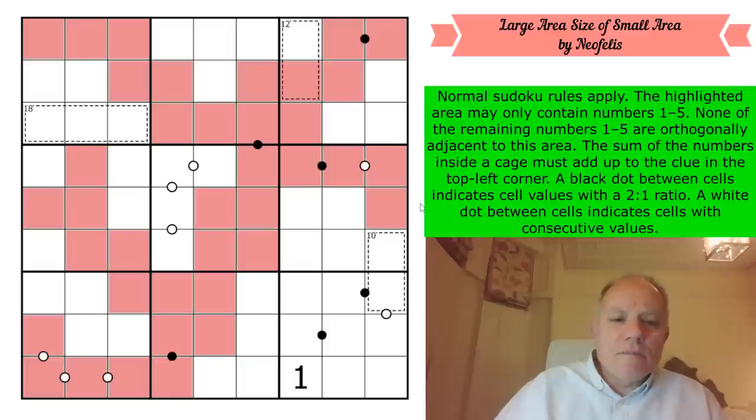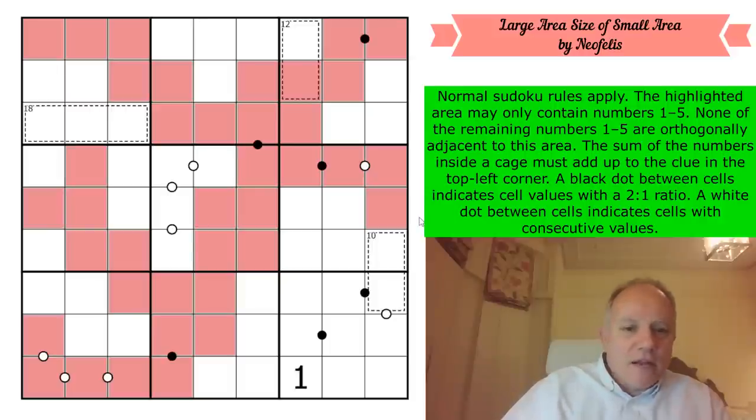We've got a few cages and the sum of the numbers inside a cage adds up to the clue in the top left corner. A black dot between cells indicates cell values with a two to one ratio and a white dot shows consecutive digits. It's only this red area that has these weird and special rules. It looks to me like there's a lot of information in this puzzle. So it may be a very good one to try for people who struggle sometimes with the puzzles we put on the channel. I think there's lots of information here. Give it a go. That is partly why I've allowed myself to waffle on for so long in the intro. Let's get cracking.